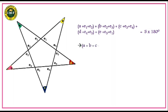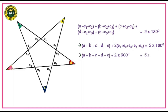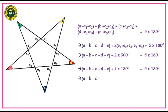Now separating interior and exterior angles: A + B + C + D + E + 2(E1 + E2 + E3 + E4 + E5) = 5 × 180°. As we already discussed, in any polygon the sum of the exterior angles is 360°, so substituting: A + B + C + D + E + 2 × 360° = 5 × 180°. That gives A + B + C + D + E + 4 × 180° = 5 × 180°. Upon transposing, A + B + C + D + E = 5 × 180° − 4 × 180°.